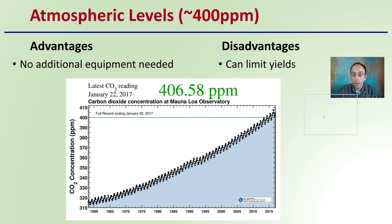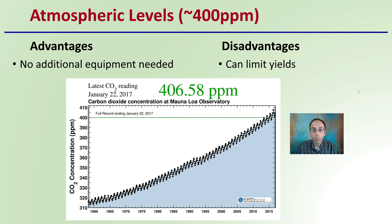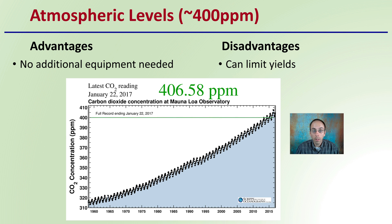If we're looking at what level we want to keep our plants at, there are some considerations. The first consideration is basically atmospheric levels, which is about 400 parts per million. This offers the advantage of no additional equipment being needed. You simply want to keep air circulating. The disadvantage is this can limit yields to whatever the atmosphere is able to provide.